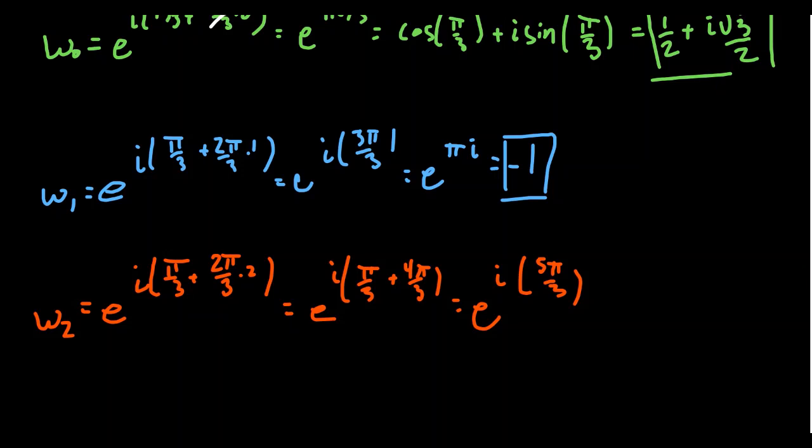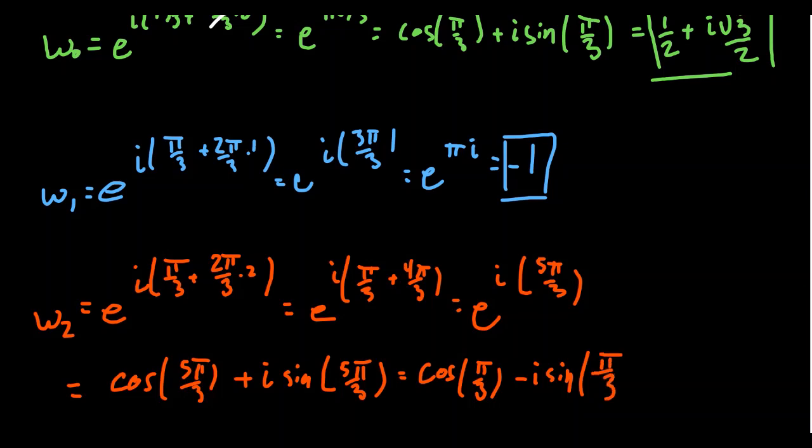And so the last one is going to give us, excuse me, it's going to give us cos(5π/3) + i·sin(5π/3). So now remember the angle 5π/3. This is an angle in the fourth quadrant that references π/3. And so this is the same thing as cos(π/3). In fact, minus i·sin(π/3), which just kind of feels like what we did before, right? This is going to equal 1/2 - i√3/2, like so.